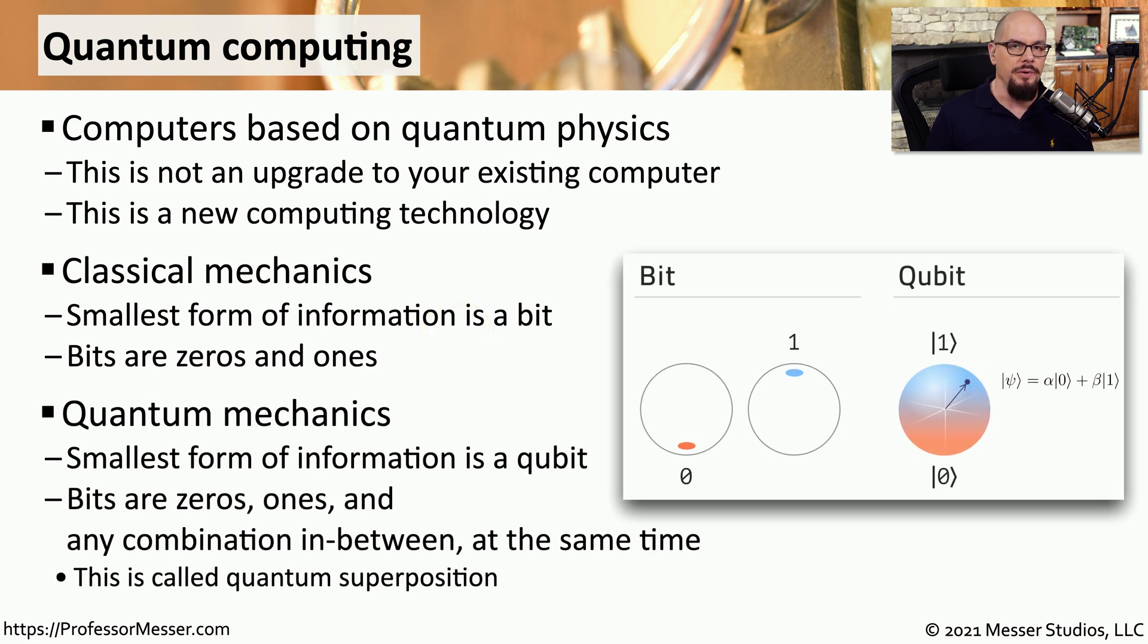With quantum computing, we no longer have bits. We have something called quantum bits, or qubits. These bits are not ones and they're not zeros, but instead they exist somewhere in the middle between one and zero. They are effectively a zero and a one at the same time. And therein lies some of the complexities surrounding quantum mechanics.